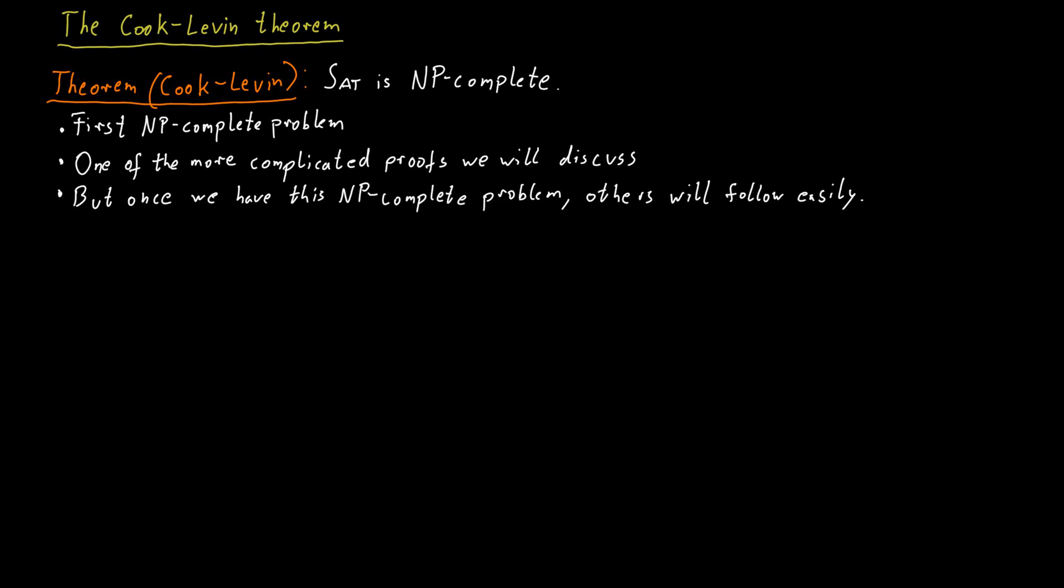So the Cook-Levin theorem is sort of a bootstrapping theorem which kickstarts this entire process of establishing NP-completeness for many, many, many more problems. Establishing completeness for the first natural problem in a complexity class is also known as a master reduction.